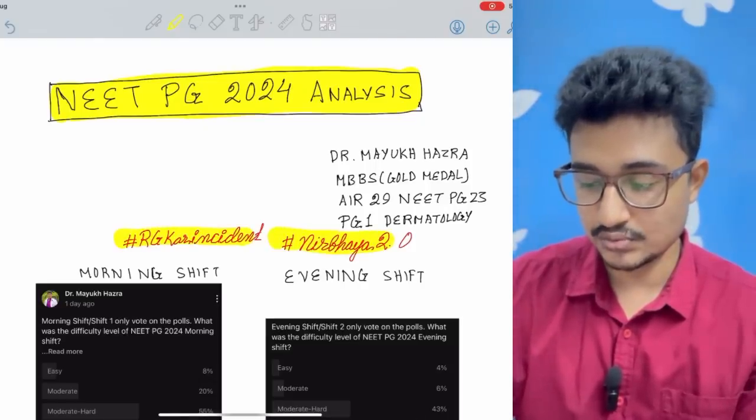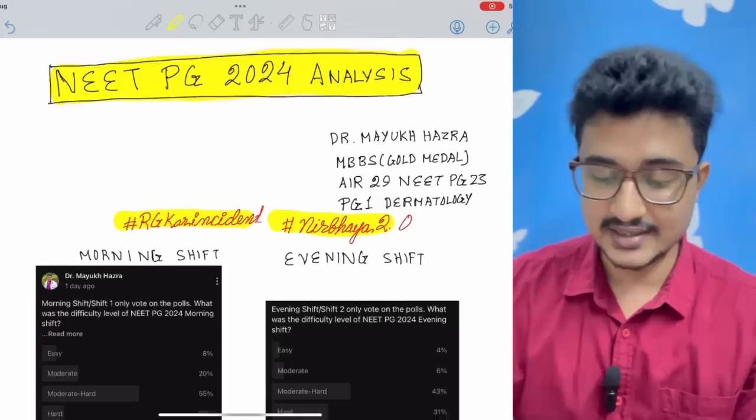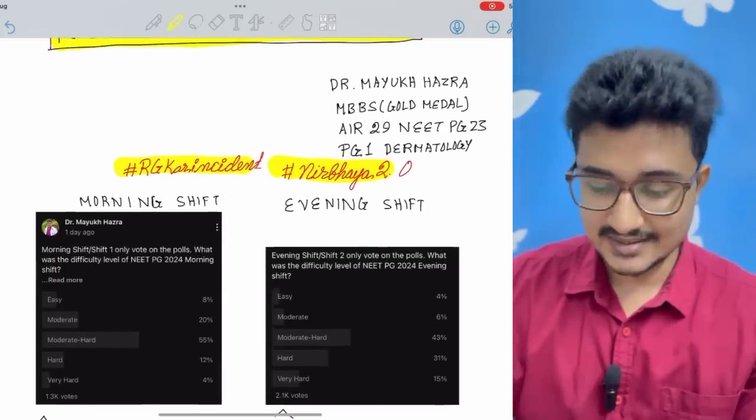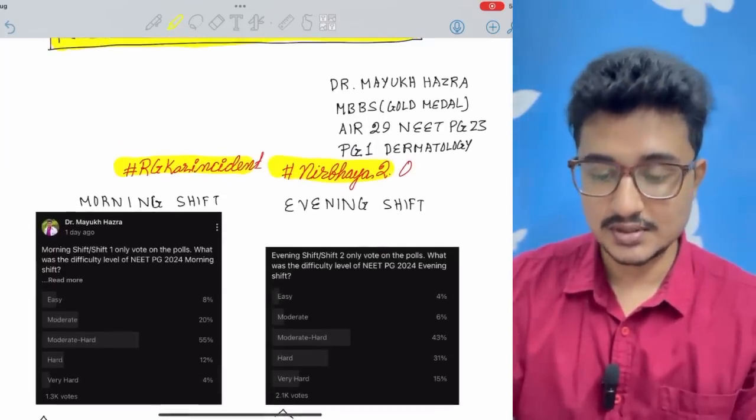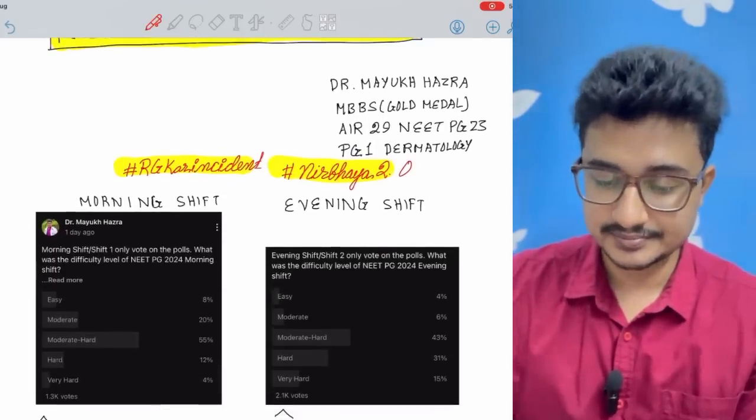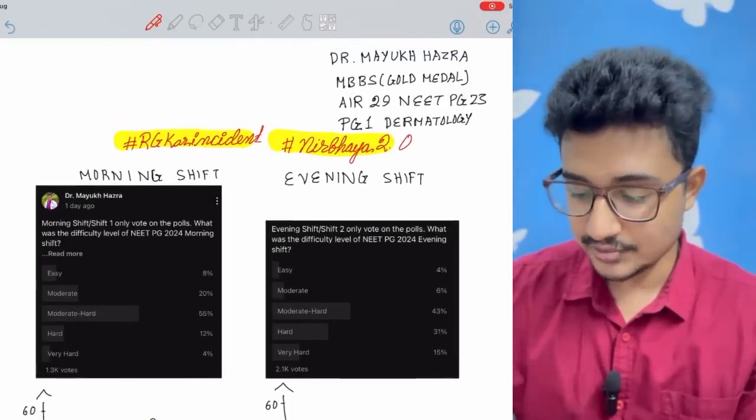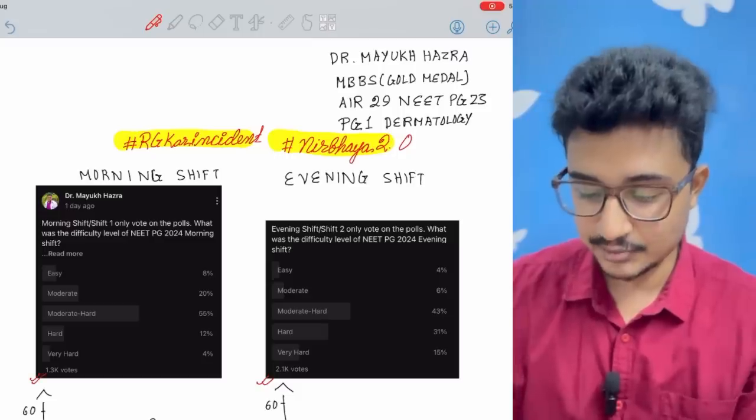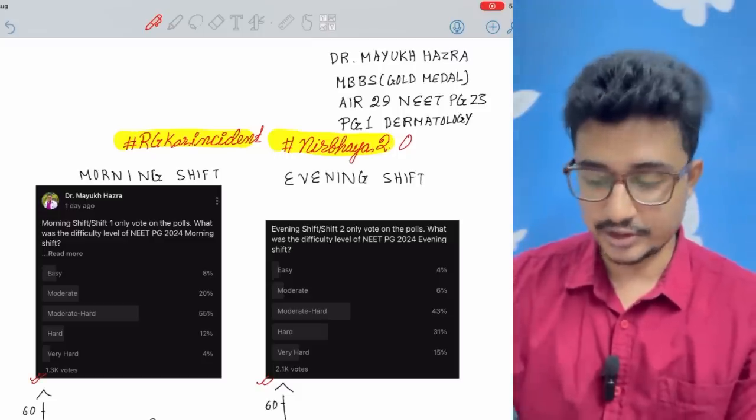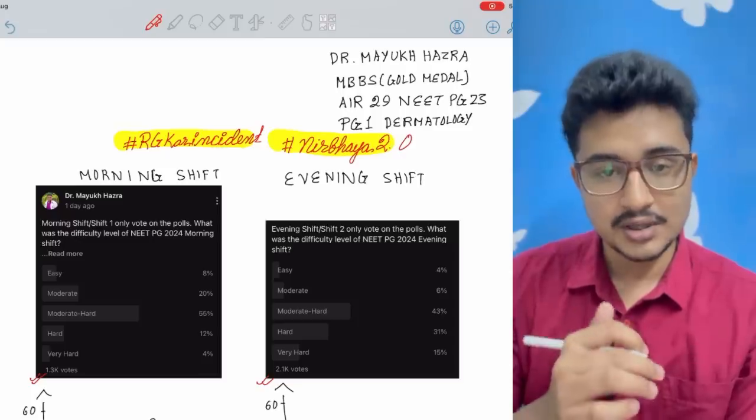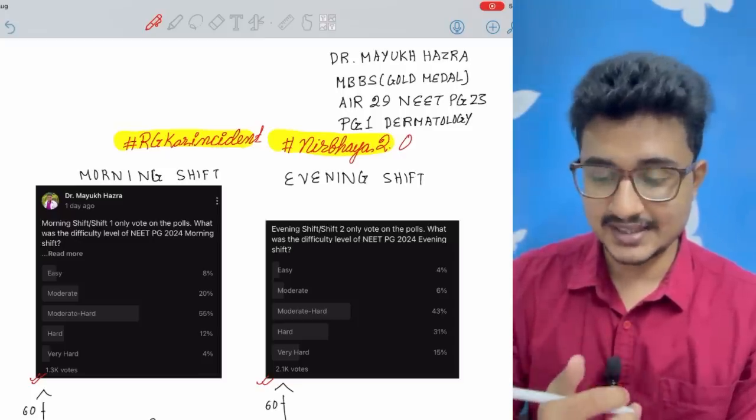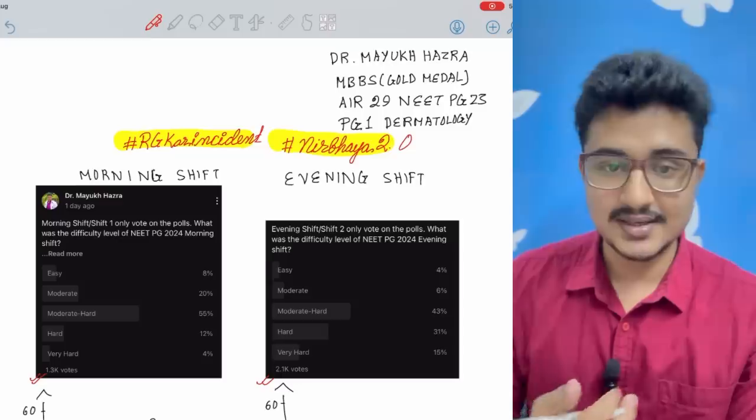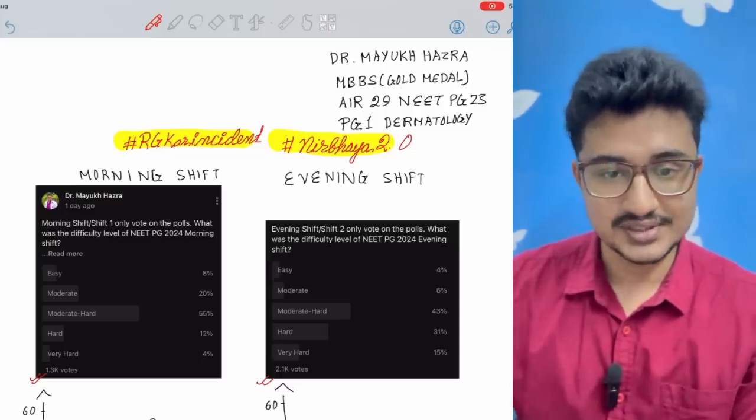I had done a poll and you can see about 2.1k votes in the evening shift and 1.3k votes in the morning shift. So among 2.3 lakh applicants you can see about two percent of the vote share so this is going in the right direction and it is representative.